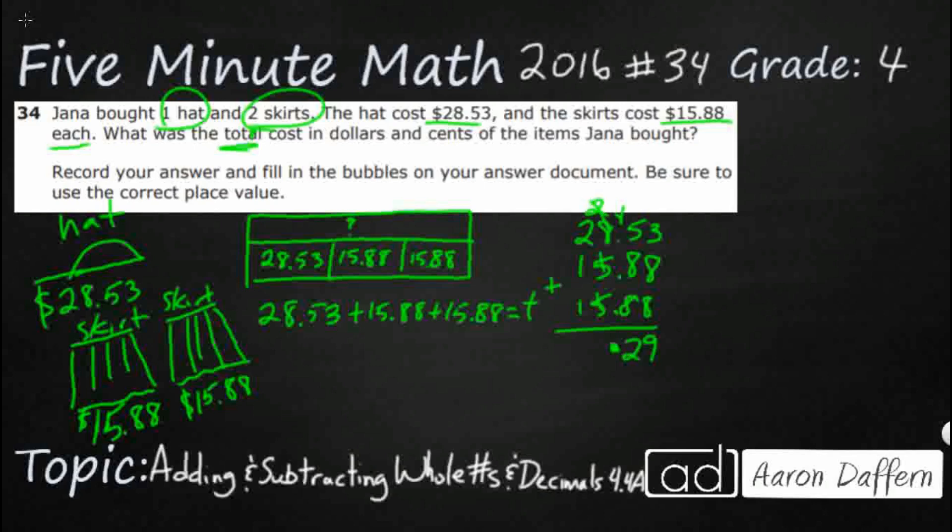2 and 8 is 10. 5 and 5 is another 10. So that's 20. So it looks like I've got 2, 4, 5, 6. So it looks like I've got $60.29. But unfortunately, there is no answer selections for us to choose from.